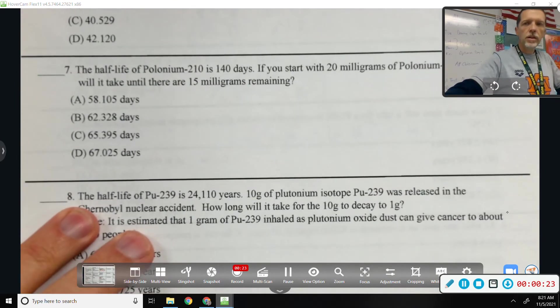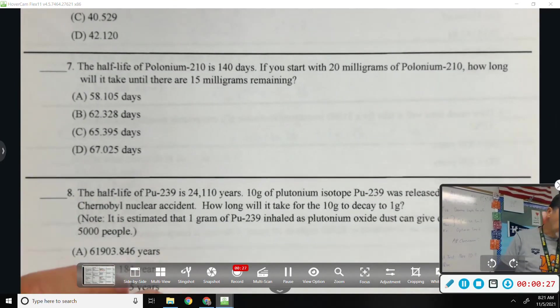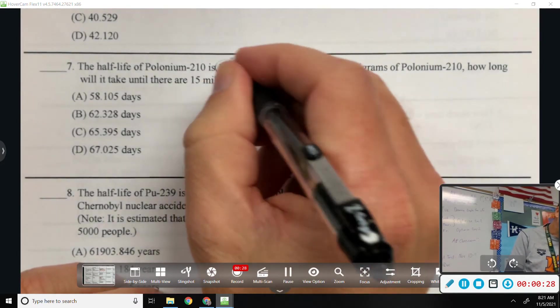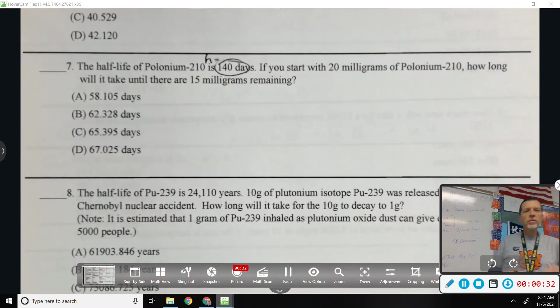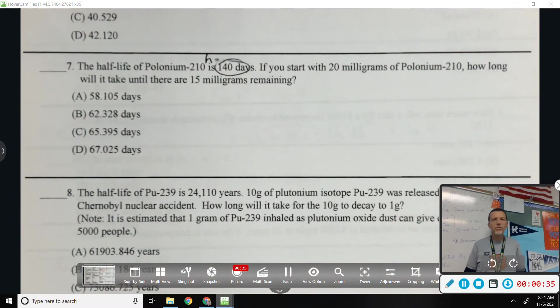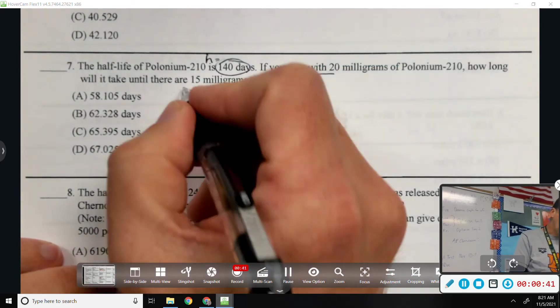Number 7. Half-life of polonium is 140 days, so that's telling me what H is. That's how long it takes for polonium to decay to half of what it was. If you start with 20, how long will it take until there are 15?